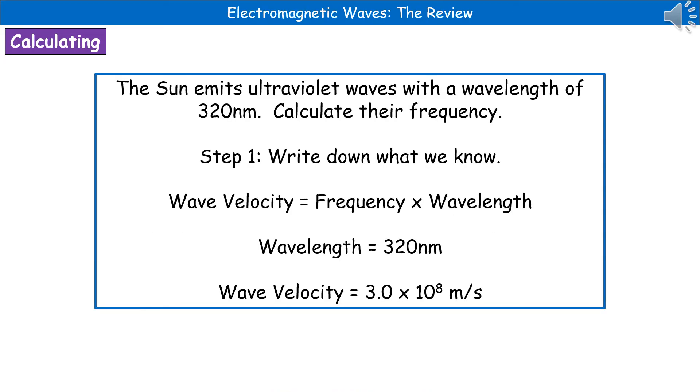Now they can ask you to carry out calculations to do with electromagnetic waves. But the key thing here is what they're not going to give you in the question. So we already know from our earlier bit of work in P5 that we've got to know the wave velocity equation, so frequency times wavelength. But you also need to know the velocity at which electromagnetic waves travel, which is our 3.0 times 10 to the power of 8 meters per second. So the kind of question they could give you is here. The sun emits ultraviolet waves with a wavelength of 320 nanometers, calculate their frequency. So they're expecting you to know the wave velocity of an EM wave, and to know the wave velocity equation. So the first thing you're going to do with that is write down what you know.